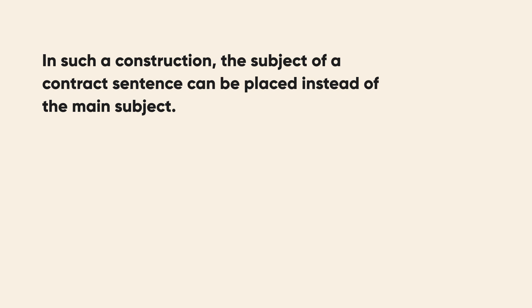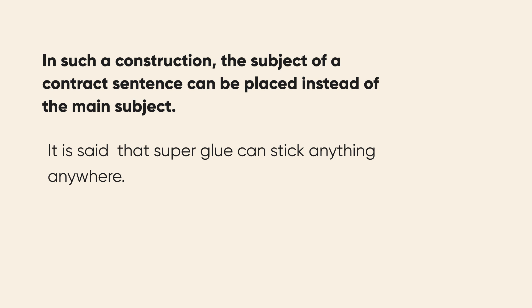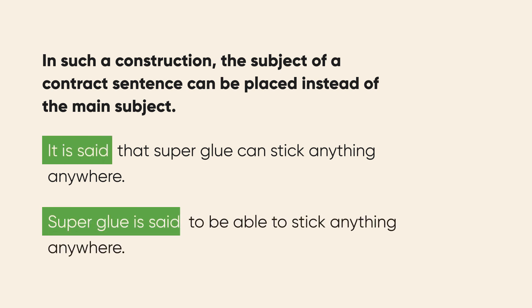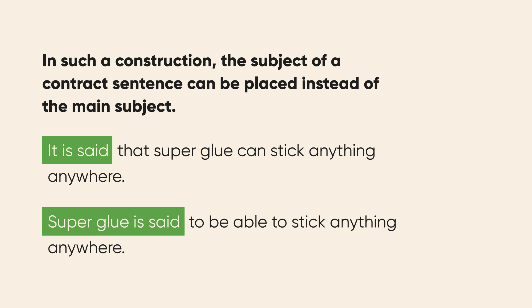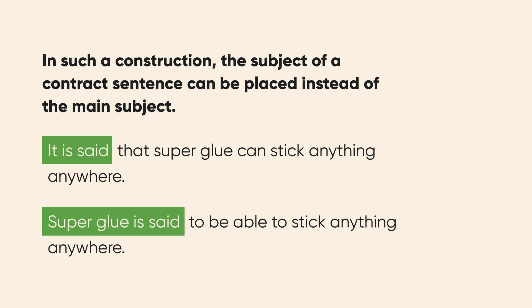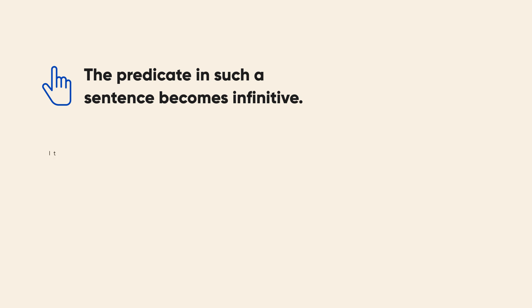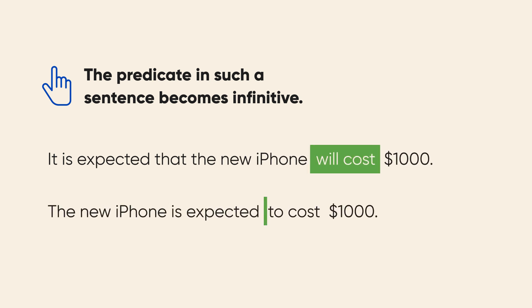Let's return to our previous example. 'It is said that super glue can stick anything anywhere.' Or: 'Super glue is said to be able to stick anything anywhere.' Pay attention — the predicate in the subordinate clause of the first sentence becomes an infinitive in the second one. 'It is expected that the new iPhone will cost $1,000.' 'The new iPhone is expected to cost $1,000.'